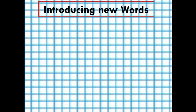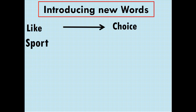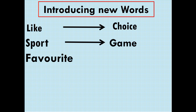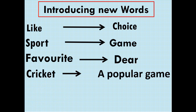Before going to the text, I will introduce you some new words. Our first word is 'like', that means choice. Second word is 'sport', that means game. Third word is 'favorite', that means dear. Fourth is 'cricket', that means a popular game. Fifth is 'well', that means good.